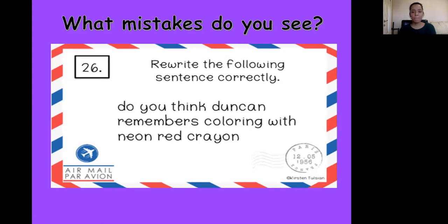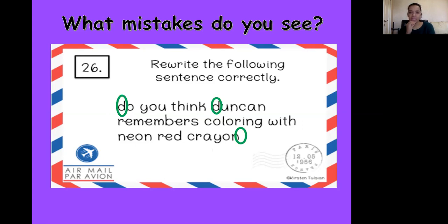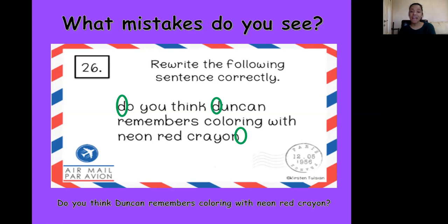What mistakes do you see here? Do you think Duncan remembers coloring with neon red crayon? We're going to start from the very beginning: we need to capitalize the D in Do. Capitalize another D in the name Duncan because it's his name. And do we put a full stop here? Because we start with the word Do, it's going to be a question — so it's actually going to be a question mark at the end. The D for the beginning of a sentence, Duncan with a capital D because of a name, and a question mark at the end.